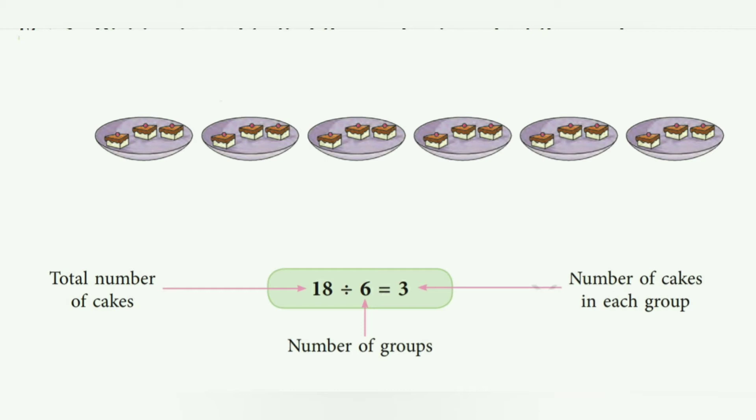We had total number of cakes, that is 18, divided by 6 because we had 6 groups. And then number of cakes in each group is 3.